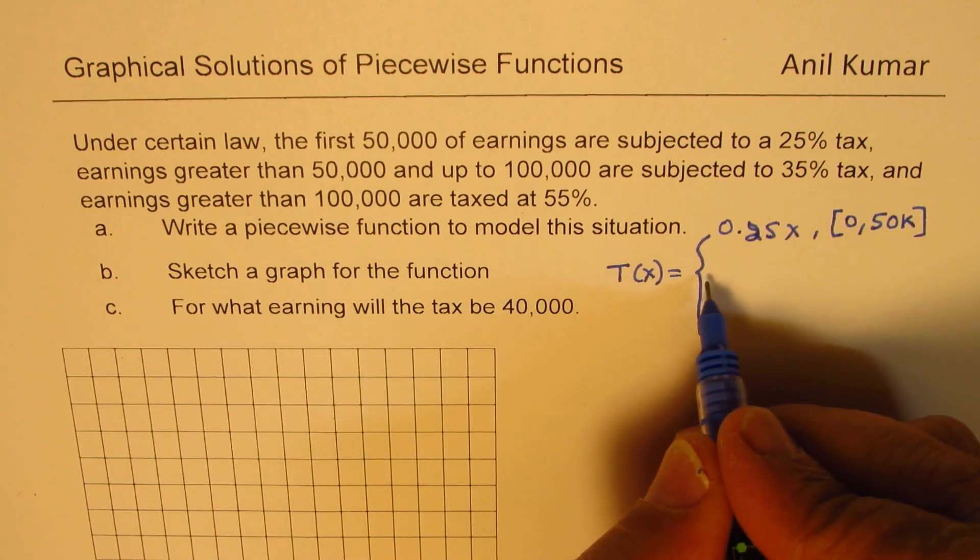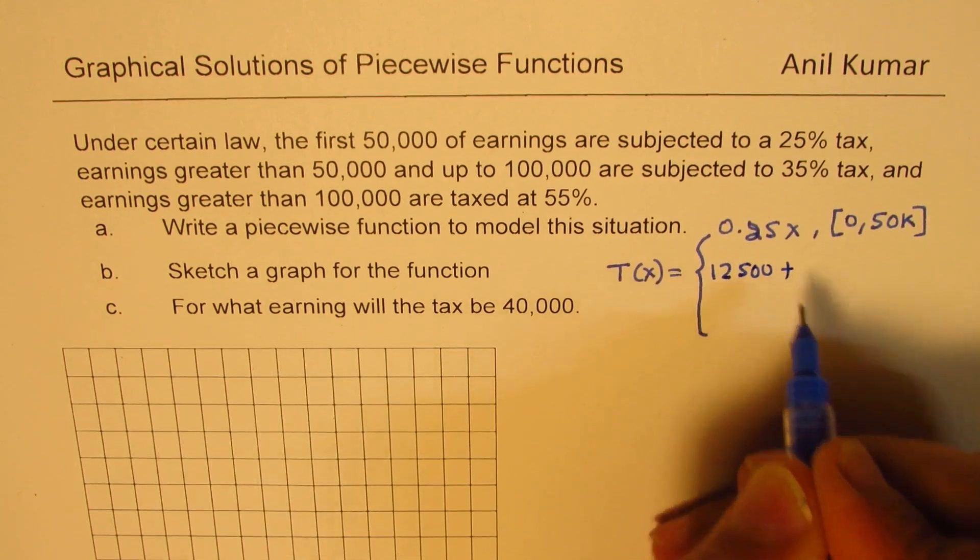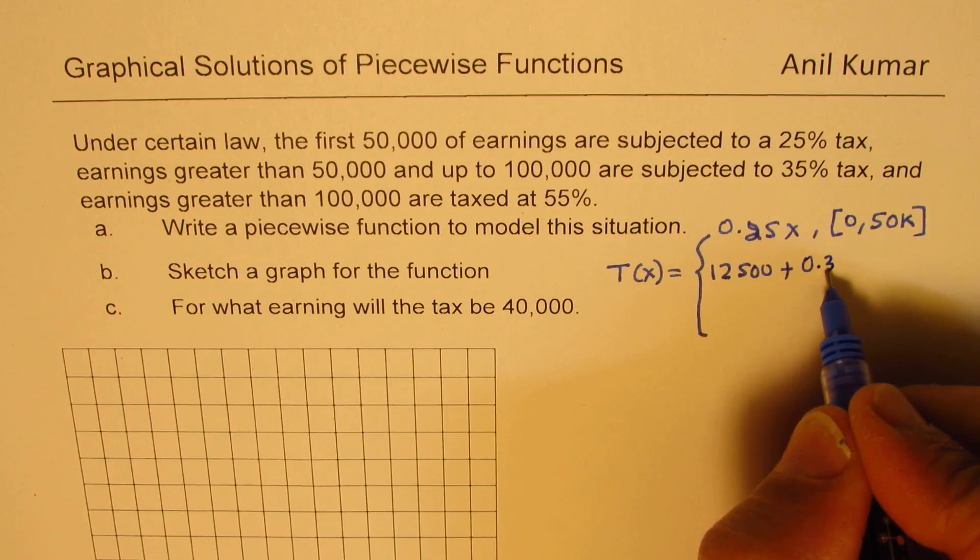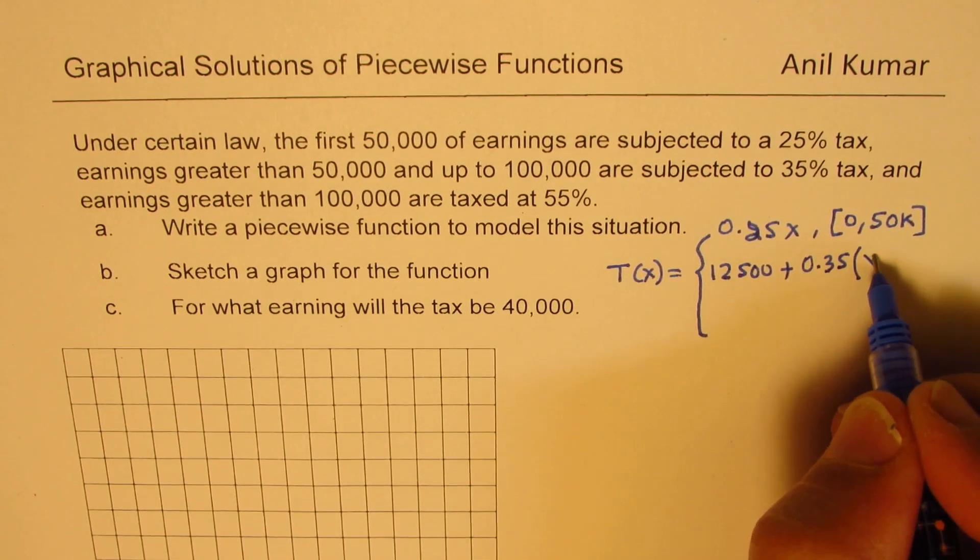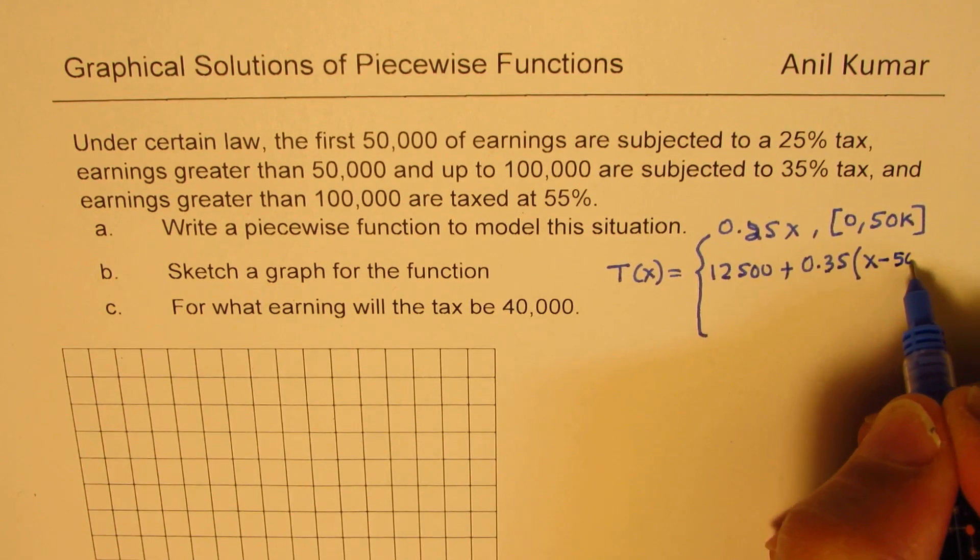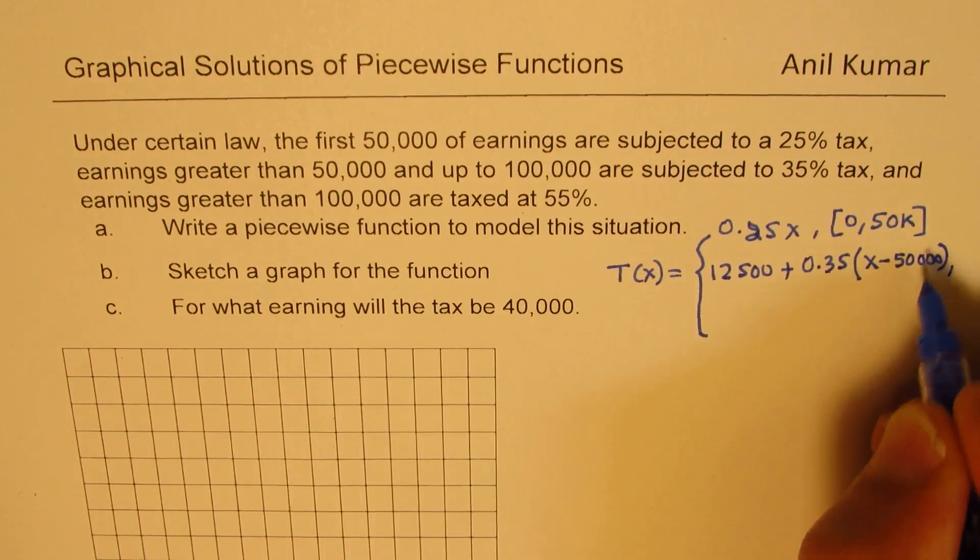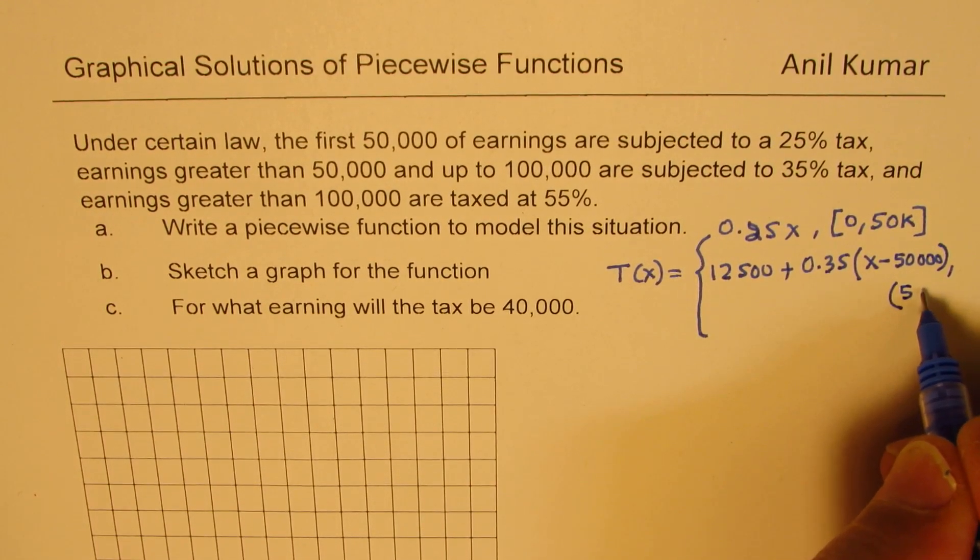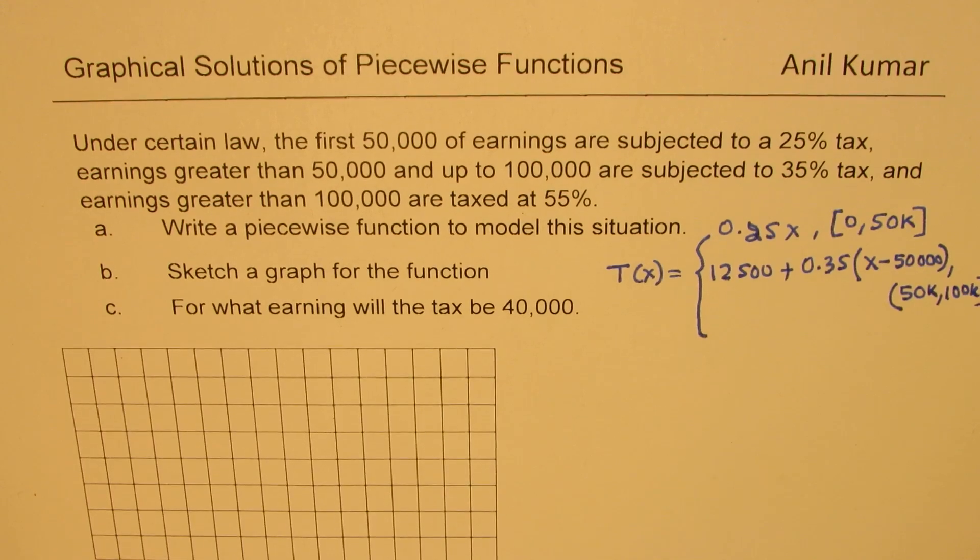And this tax rate was 35% for more than 50,000. Maximum amount in this case came out to be 12,500. And to this, we'll add the tax rate of 35%, which is 0.35 on the value which is higher than 50,000, so X minus 50,000. This formula can be applied when we are working on 50K to 100K, where 100K is included but 50K is not included.